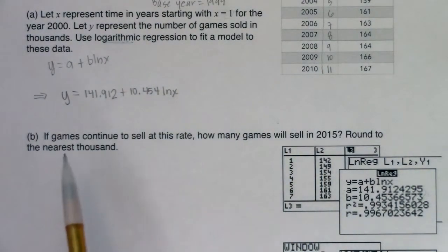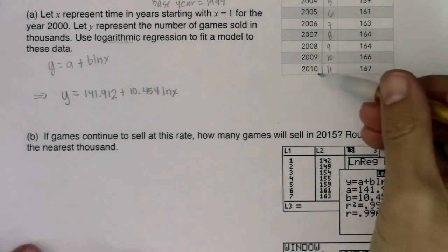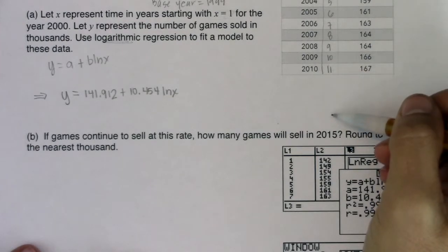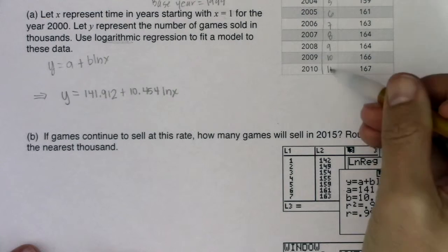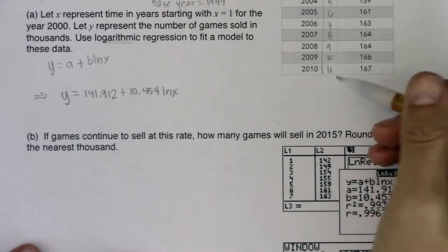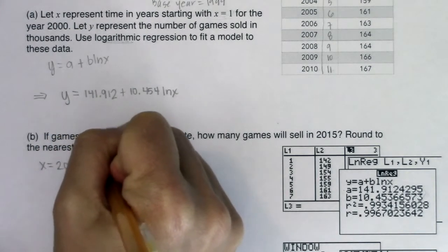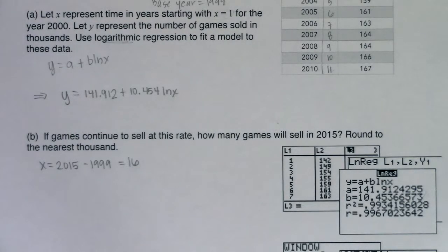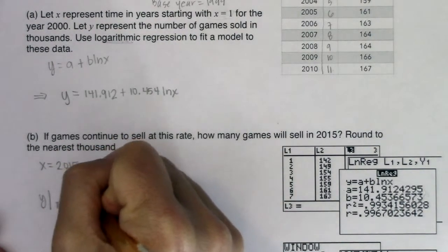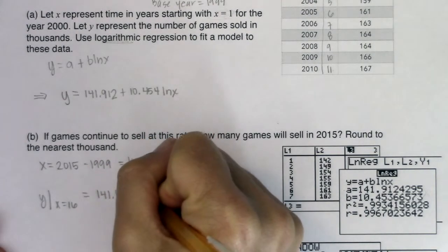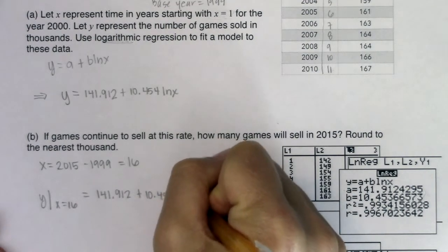Moving on: if the game continues to sell at this rate, how many games will it sell in 2015, rounded to the nearest thousand? Be careful — we want the year 2015. You can count: if 2010 was year 11, you need five more years, so take 11 and add five to get x equal to 16. Or remember the base year is 1999, so x equals 2015 minus 1999, which is 16. So we need x equal to 16, and I want the Y value: y = 141.912 + 10.454·ln(16).